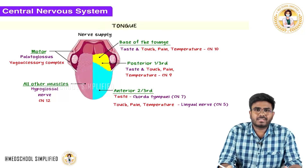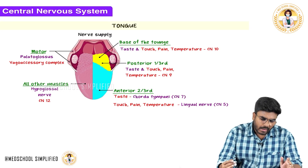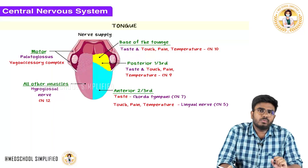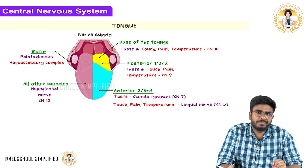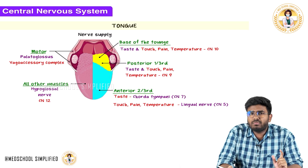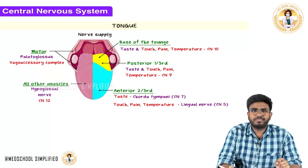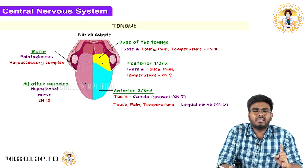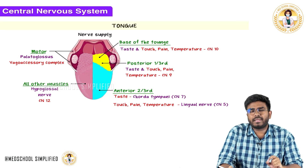Welcome back. Now let's discuss the tongue. We have to discuss different types of nerve innervations — what are the motor supply and what is the sensory innervation or sensory supply for the tongue.